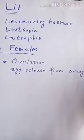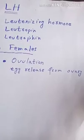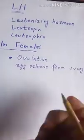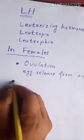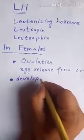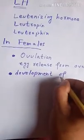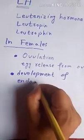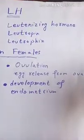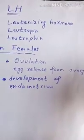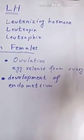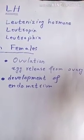After the release of the egg and its traveling towards the uterus, another function of luteinizing hormone in females is the development of the endometrium. The endometrium is the inner wall of the uterus where conception occurs. Luteinizing hormone develops the endometrium and prepares the uterus for conception and pregnancy.